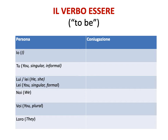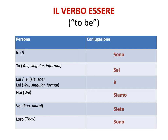Let's do this very quickly. For io, the form of essere is sono — io sono. For tu, the correct form is sei — tu sei. For lui and lei, the correct form is è. For noi, it's siamo; for voi, siete; and for loro, sono. Remember, you need to memorize this. Io sono means I am; tu sei, you are; lui è, he is; lei è, she is; noi siamo, we are; voi siete, you guys are; and loro sono, they are.